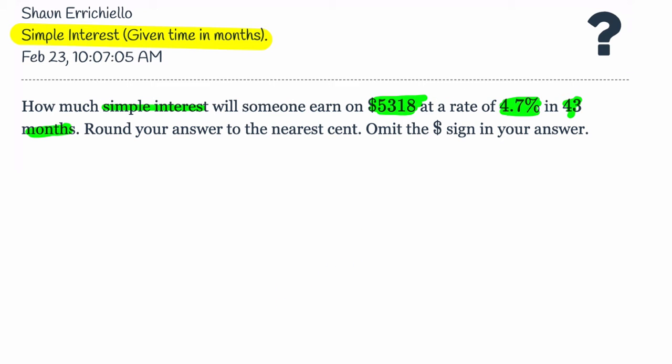Okay, so with simple interest, the idea is that I, which is our interest, is equivalent to the principal times the rate of interest, that's a decimal, times time in years. That's our assumption, that time is in years, rate is a decimal, and principal is our starting amount.